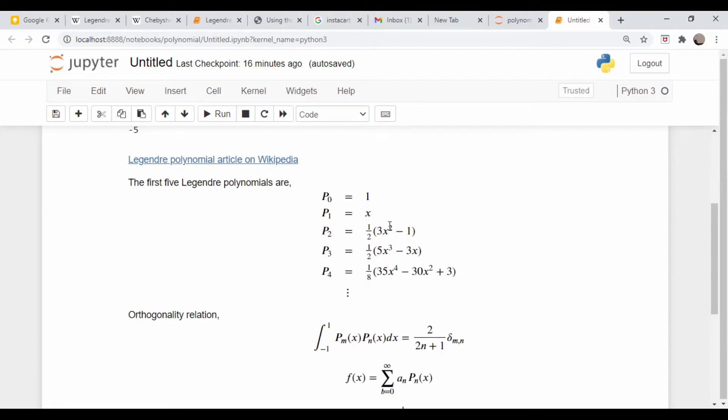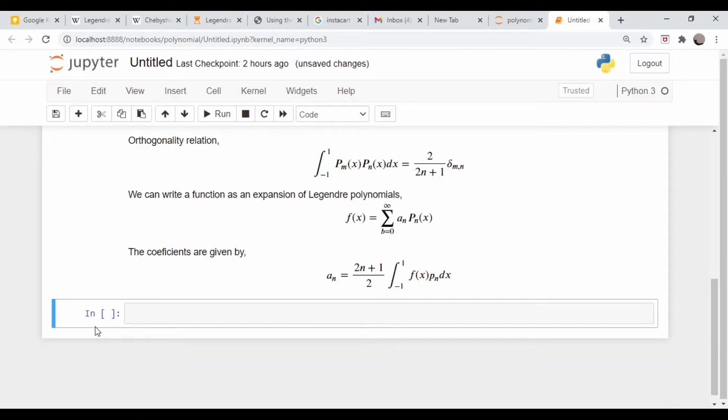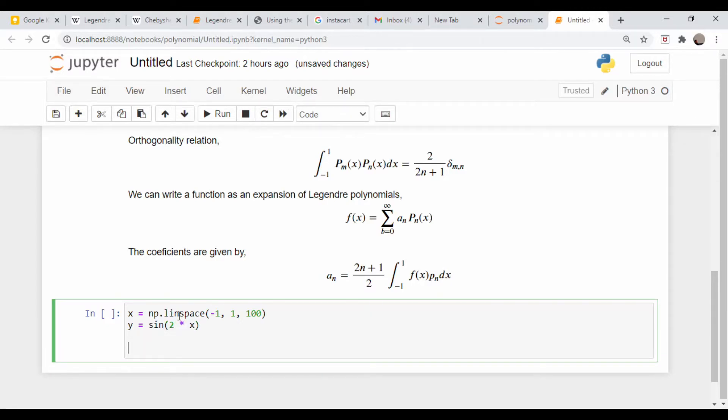So I want to play around with this a bit and do a simple example where we approximate a function as a finite sum of Legendre polynomials. Since we don't need that, I'm going to define my interval. Remember this is on the range minus 1 to 1, so np.linspace minus 1 to 1, let's do 100 points. This is my x value, and my function is just going to be sine of 2 times x.